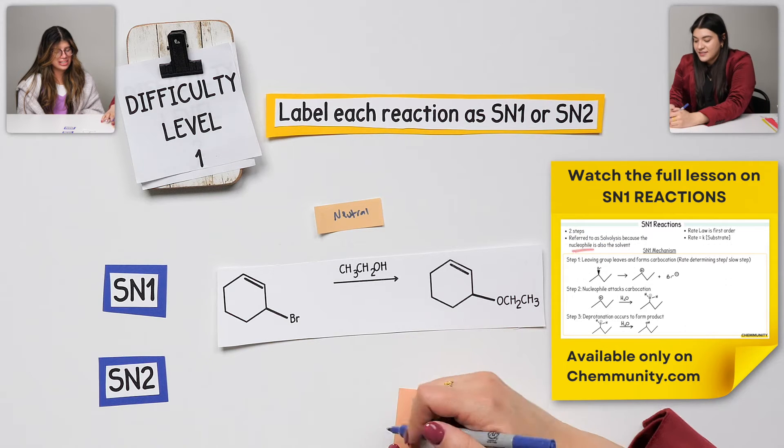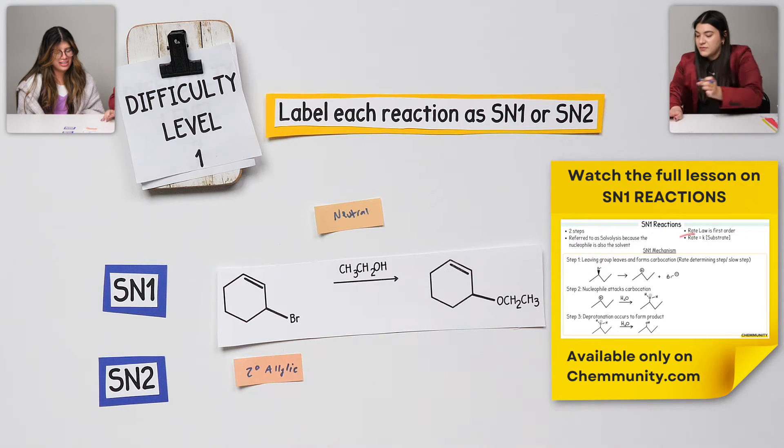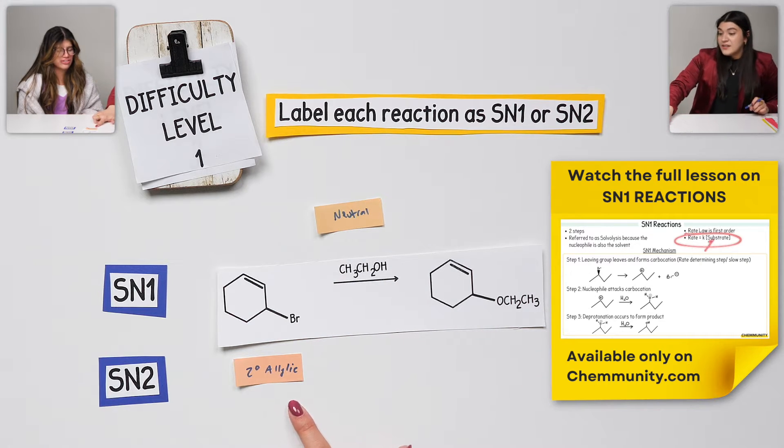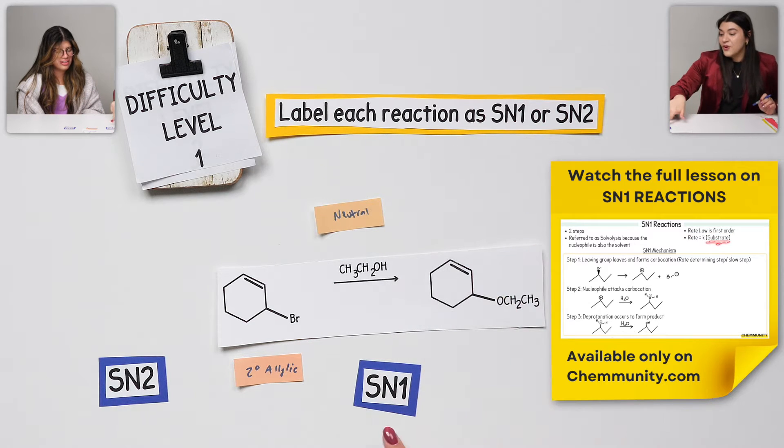This is secondary, which works for both SN1 and SN2. How else can we classify that alkyl halide? Allylic. Good. So it is secondary and it's also allylic, which makes it even faster when it is allylic.